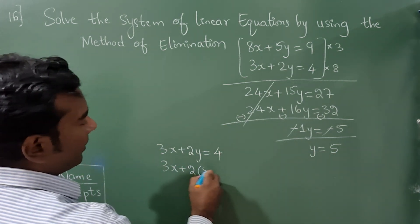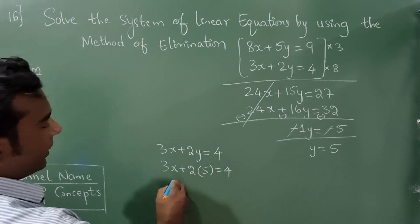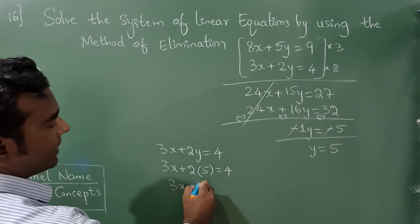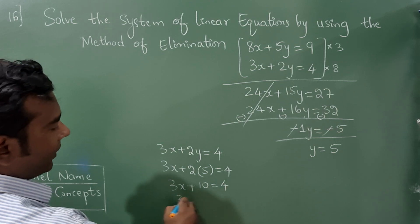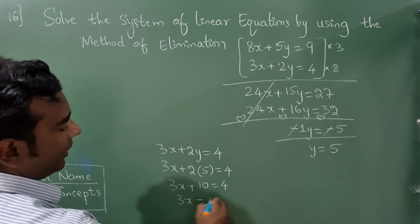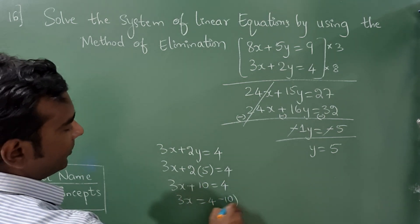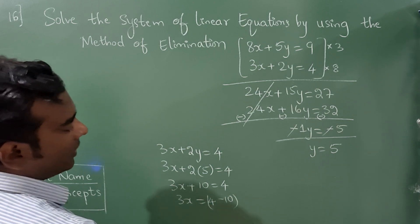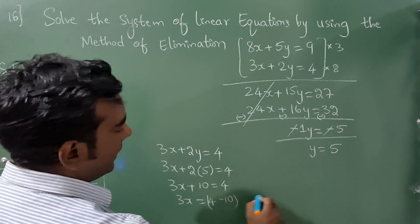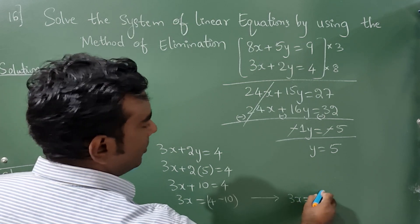3x + 10 = 4. Take 10 to the other side: 3x = 4 - 10. So 4 minus 10 is -6, therefore 3x = -6.